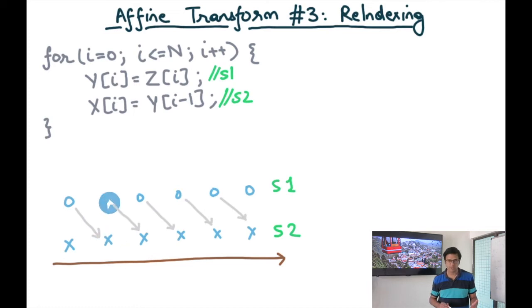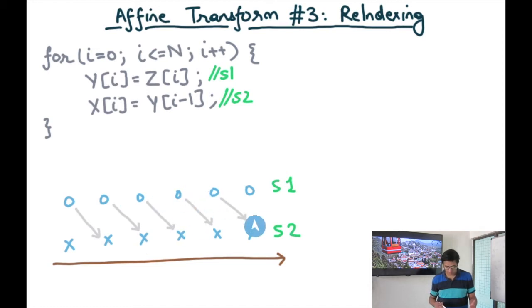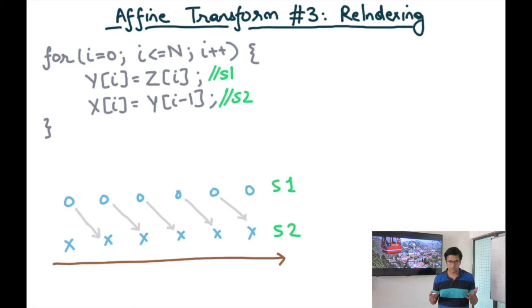Similarly, I can draw an edge from the first iteration of S1 to the second iteration of S2 and so on. And so this becomes my iteration space with dependency edges, pictorially speaking.